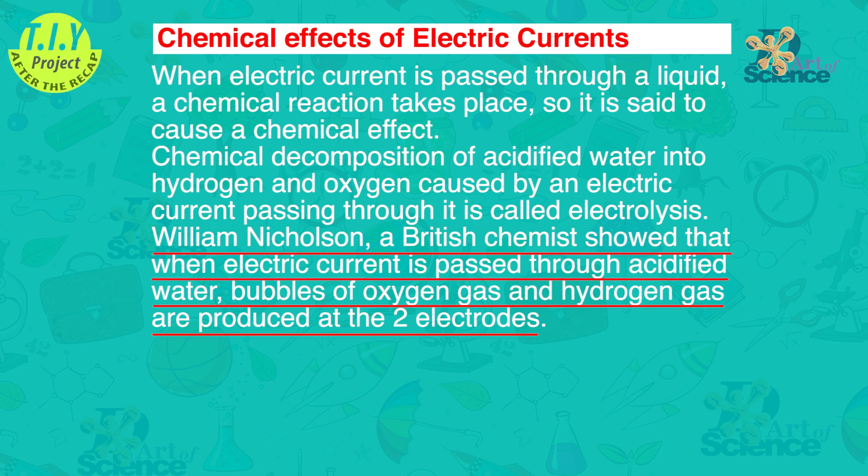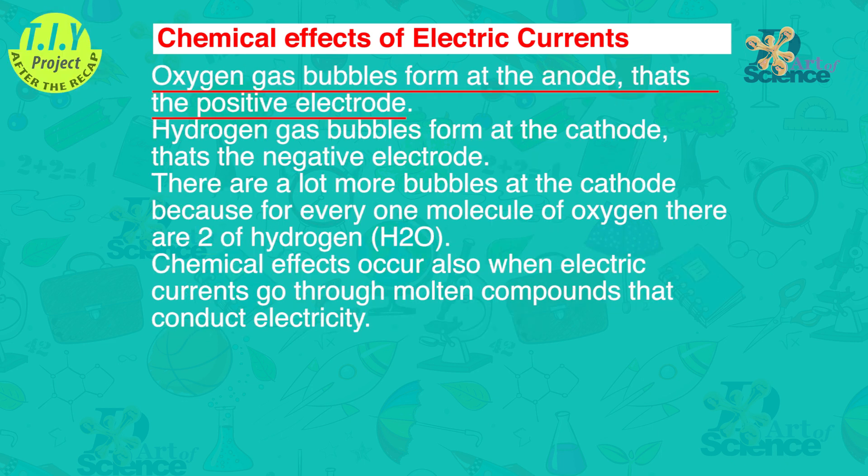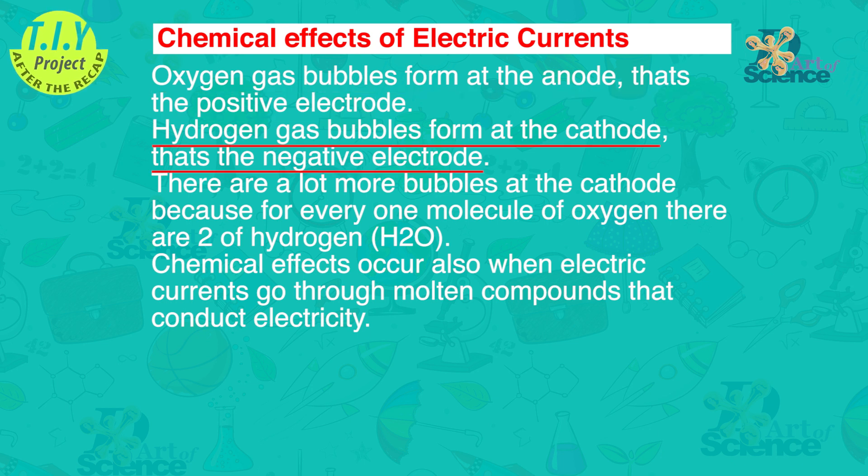William Nicholson, a British chemist, showed that when electric current is passed through acidified water, bubbles of oxygen gas and hydrogen gas are produced at the two electrodes. Oxygen gas bubbles form at the anode, that's the positive electrode. Hydrogen gas bubbles form at the cathode, that's the negative electrode.